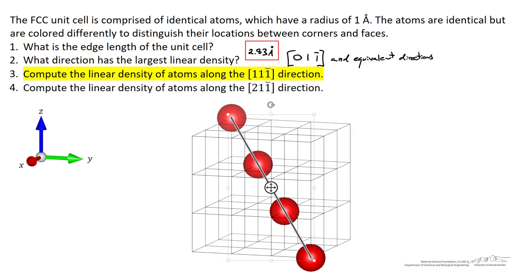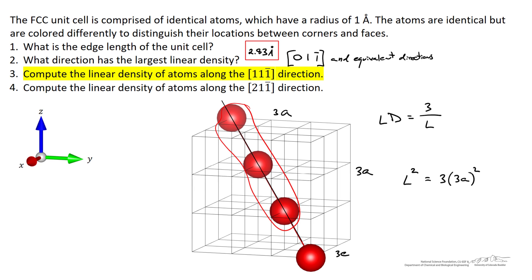If I use my measuring device again, you might think that there are 4 atoms along the length of that line. But remember, the atoms at the end are shared between adjacent lines. So what I find it useful to do is just move the line a little bit and then recognize that there's only 3 atoms along the length of that line. So the linear density in that direction is going to be equal to 3 atoms divided by the length of that line. Because I'm using a unit cell that is 3 times longer on each side, I've got 3a by 3a by 3a, and the length of that line squared is going to be equal to 3 times 3a squared, or the length of the line is going to be equal to the square root of 27 times a, which is equal to 2.83 angstroms.